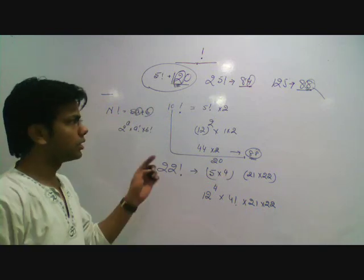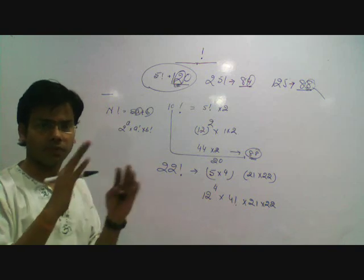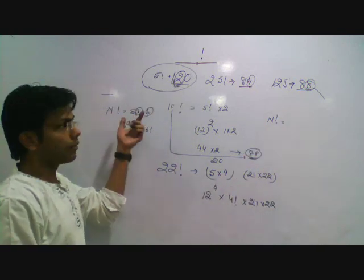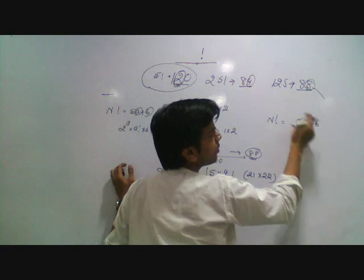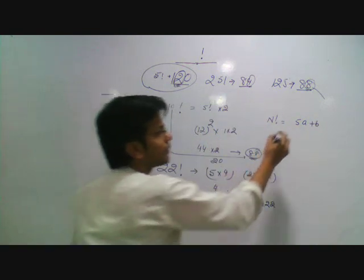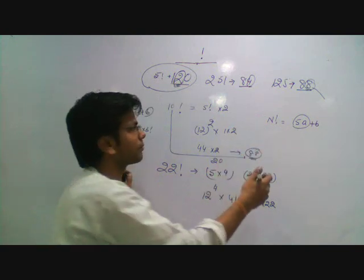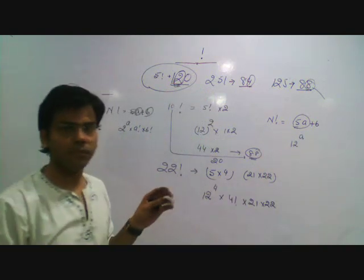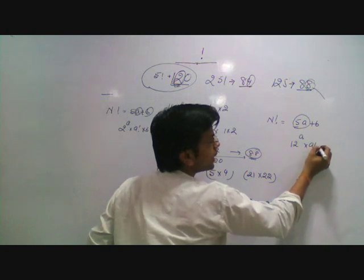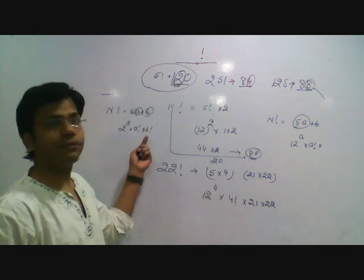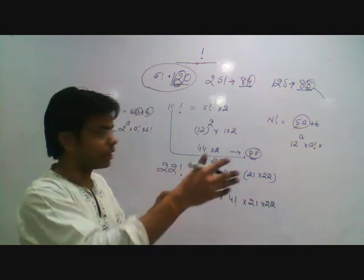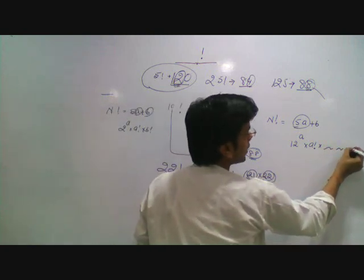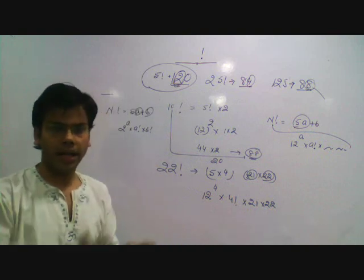For the last 2 non-zero digits, write n as 5A plus B. The formula becomes 12 raised to power A, into A factorial, into the product of extra terms from 5A+1 up to n — taking last 2 digits of each. For example for 22 factorial, extra terms are 21 and 22 multiplied. Calculate last 2 digits of each component and multiply to get the result.